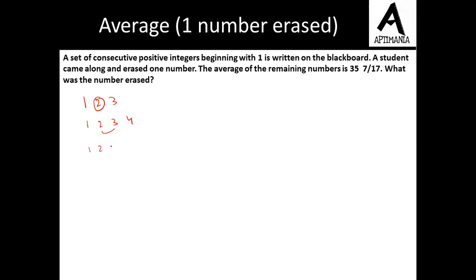Suppose if I take 5 numbers — 1, 2, 3, 4, 5 — the average will be 3. In the case of 4 numbers, it was 2.5. So you will see that whenever we are talking about consecutive numbers, the average remains at the mid-value.